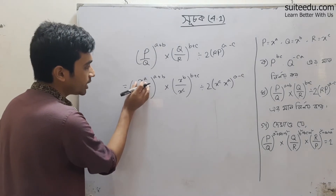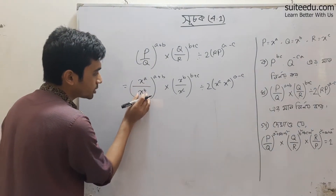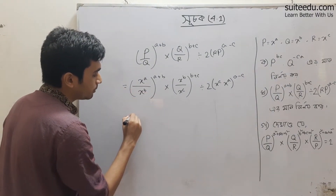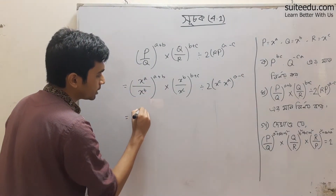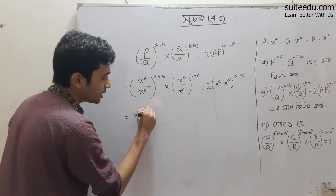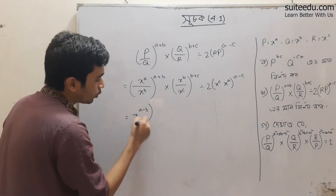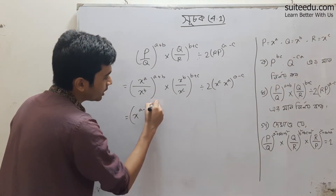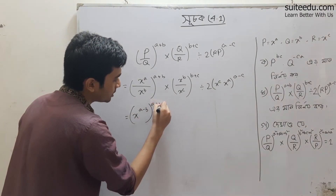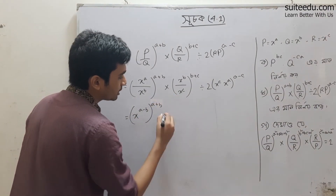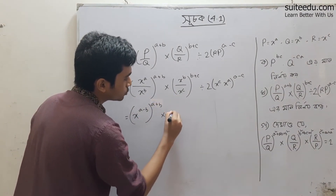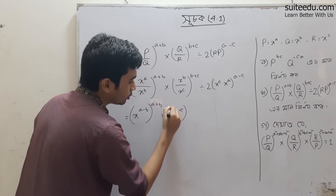Then R divided by P, which is x to the power C divided by x to the power A, whole to the power A minus C. We simplify each bracket: x to the power A minus B, whole to the power A plus B, into x to the power B minus C, whole to the power B plus C.